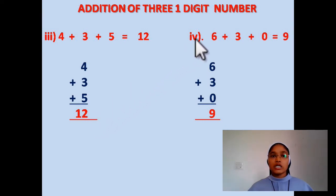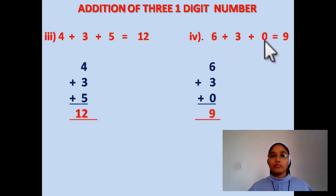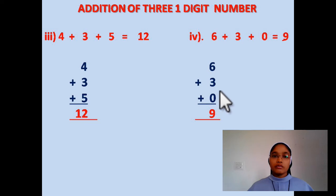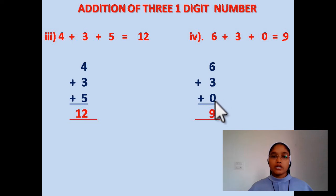Question number 4: 6 plus 3 plus 0, equal to 9. Now, here we have already arranged the numbers. So you have to add it: 6 plus 3 is 9, 9 plus 0 is 9. So your answer will be 9.